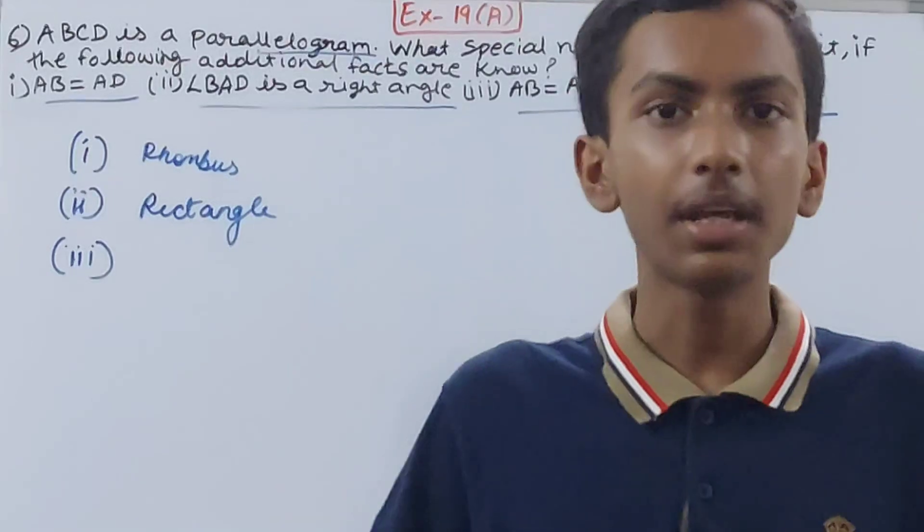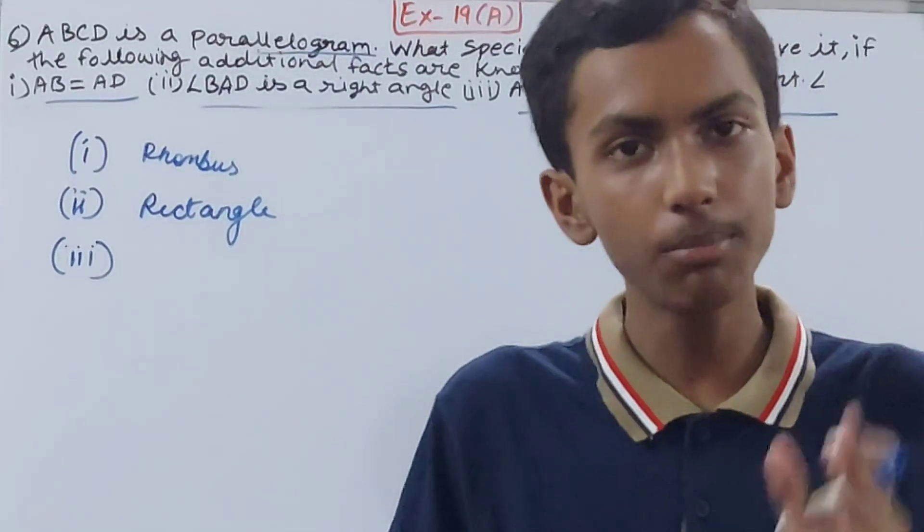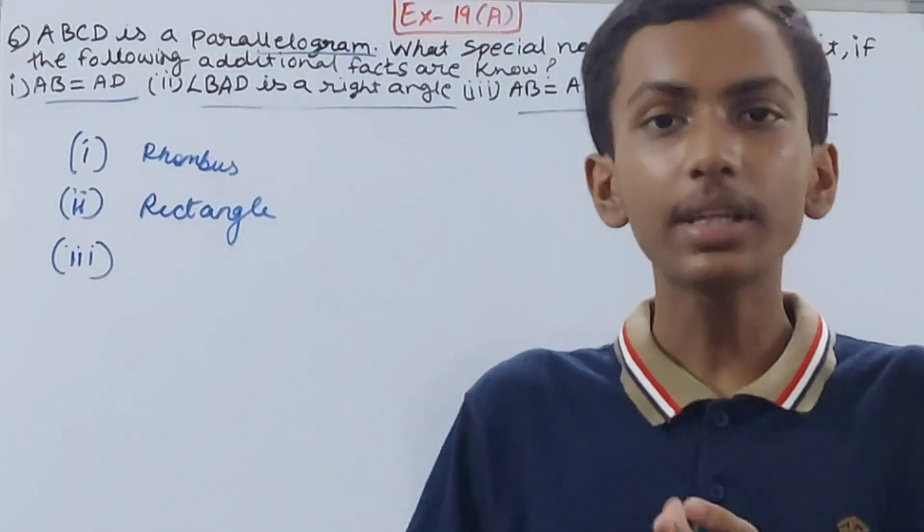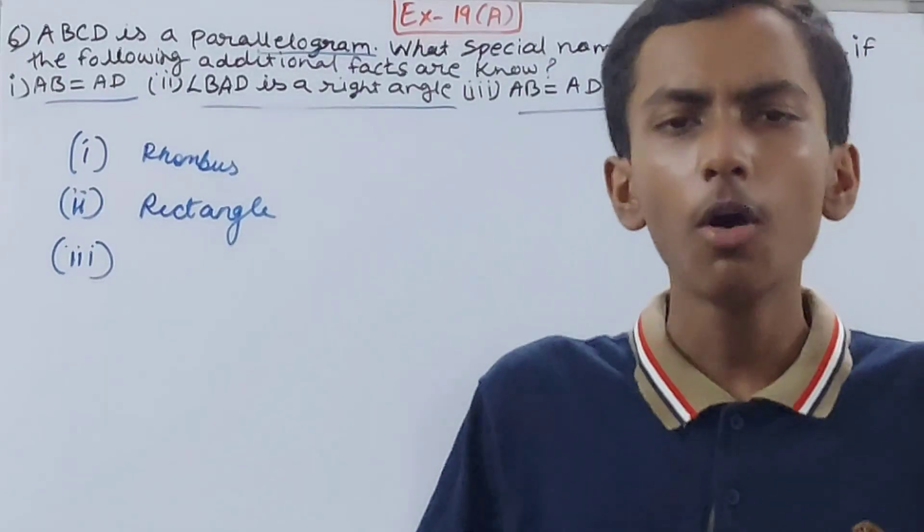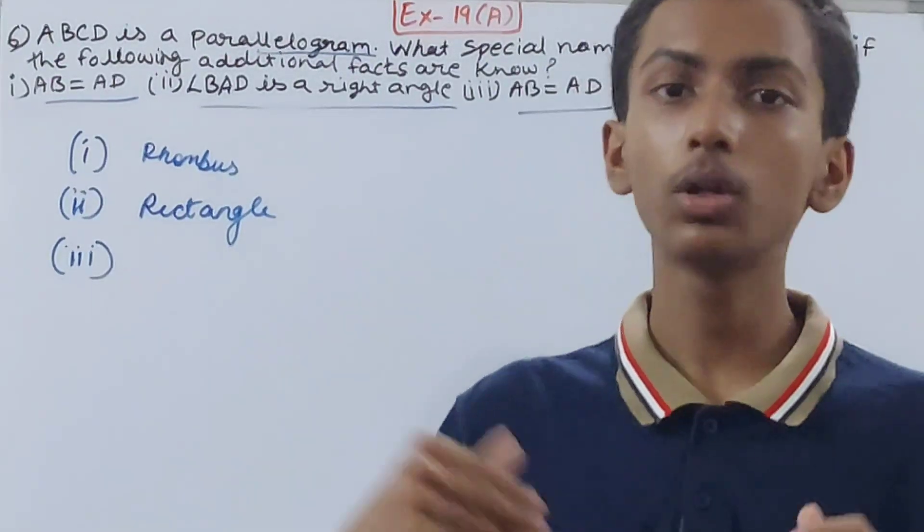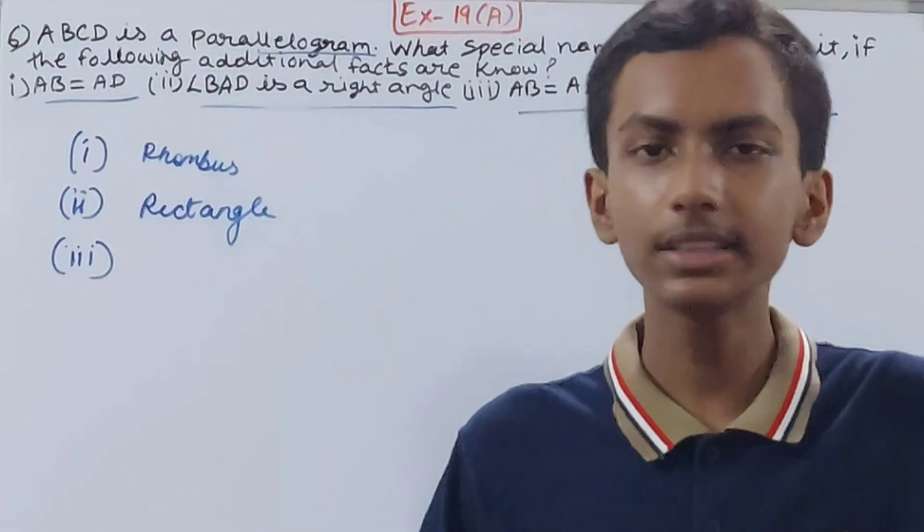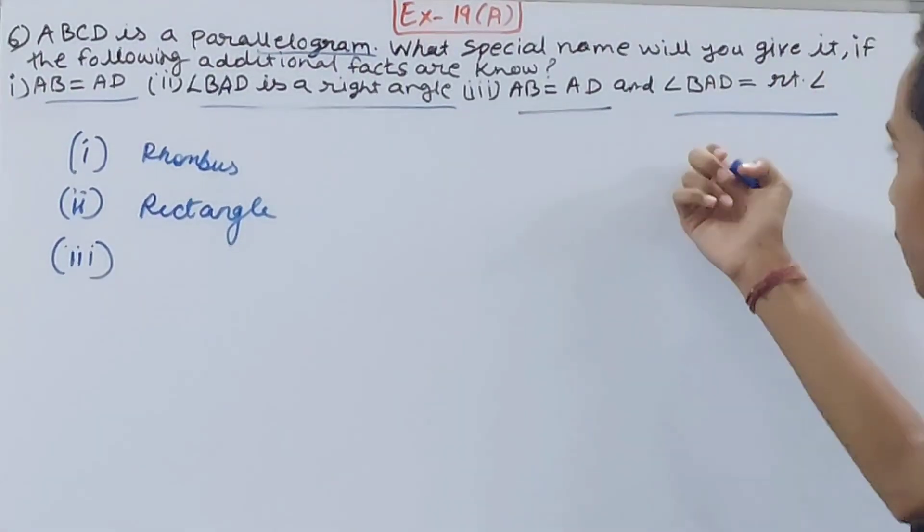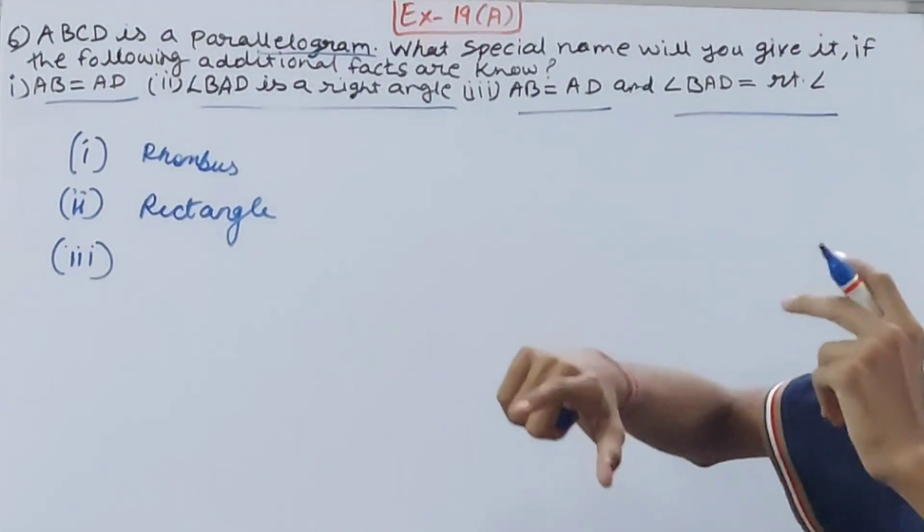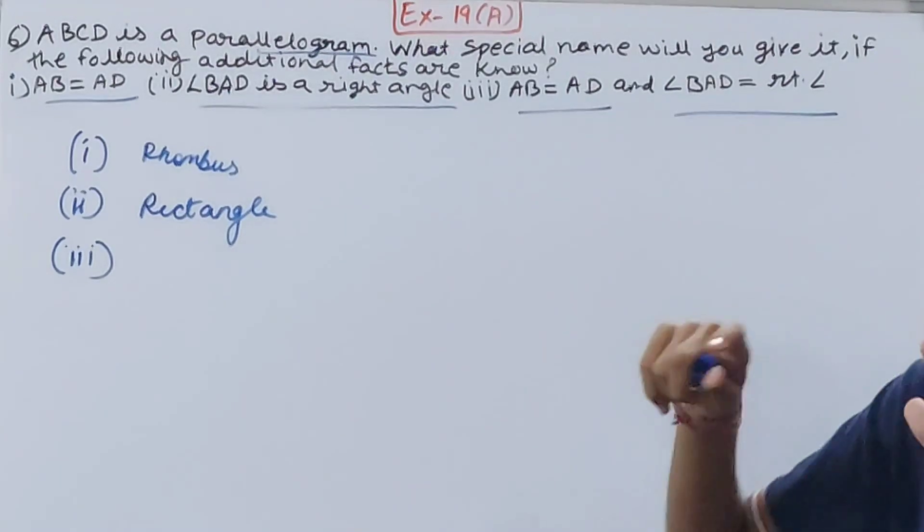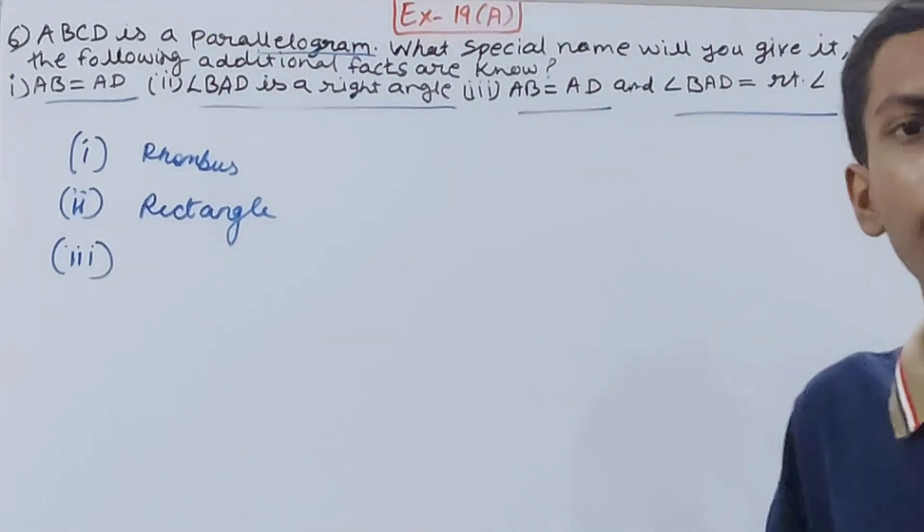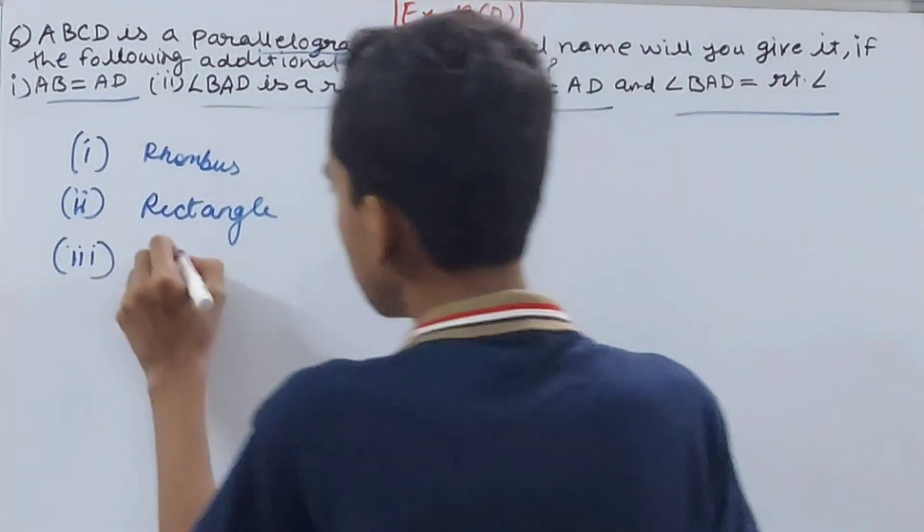It has properties of both rhombus and a rectangle. So we cannot say it is only a rhombus or only a rectangle. Therefore it's a separate name given to this figure, that is square. So this type of figure where AB is equal to AD and angle BAD is equal to right angle will be called a square. That's the final answer.